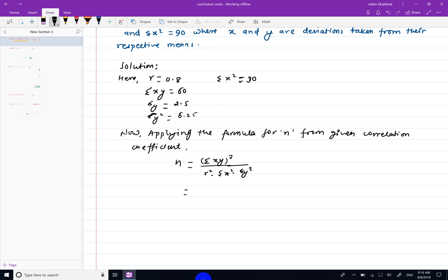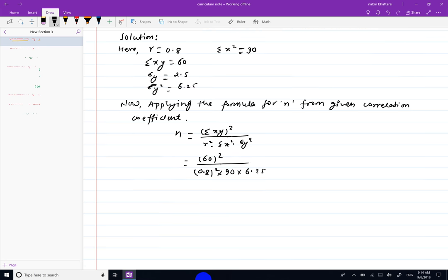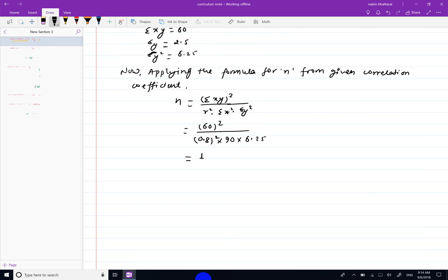Summation xy is equal to 60, so 60 squared divided by r squared, which is 0.8 squared, into summation x squared into sigma y squared. Sigma y squared is equal to 6.25. This gives us the total number of observations.